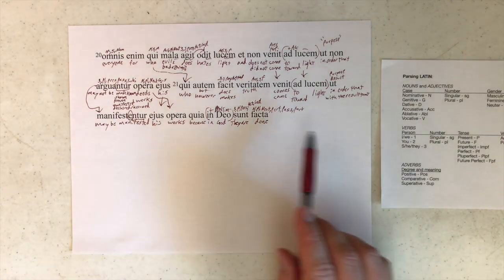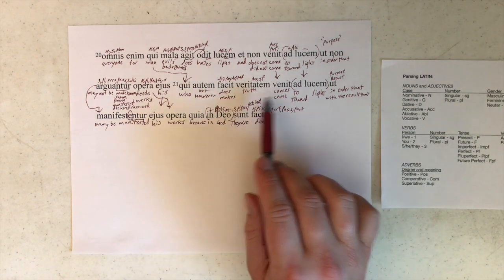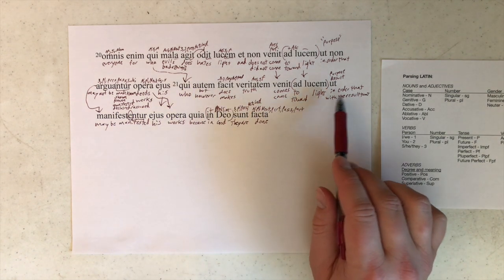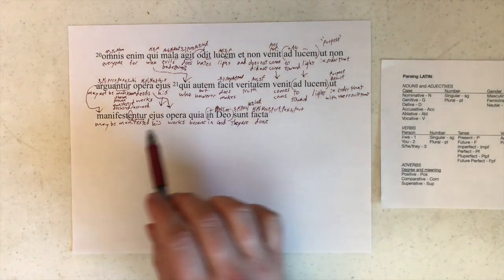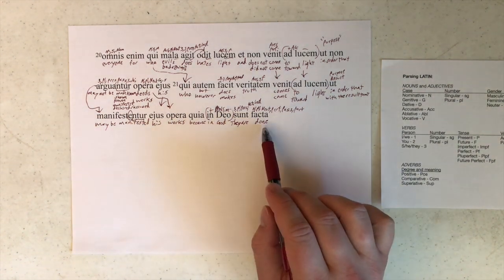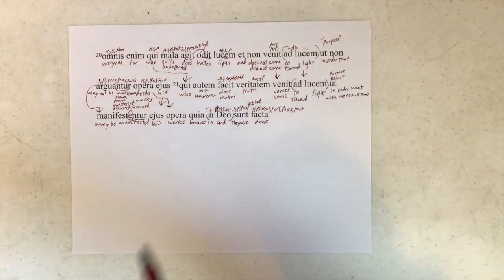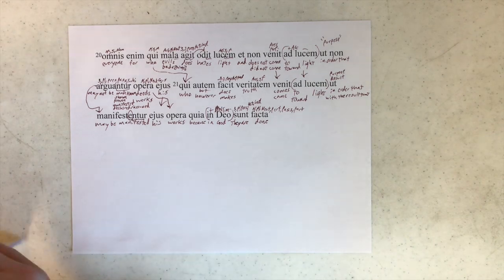And then from verse 1, checking, yes, we did everything. But who does truth comes or came to light in order that, or with the result that, his works may be manifested, because they are done in god. Now from verse 1, the very last time that I have to read this huge stack of papers.